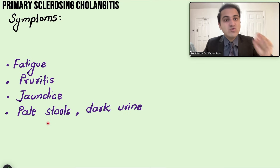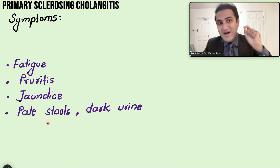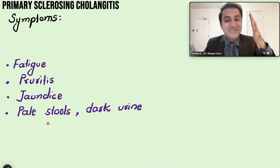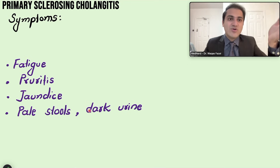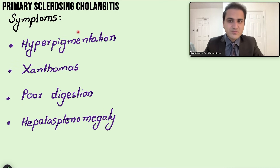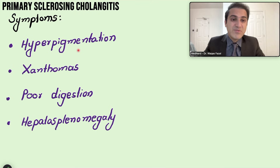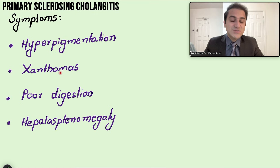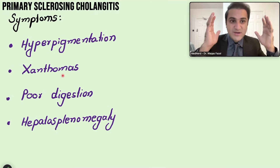Since bile is absent from stools, it is instead excreted by the kidneys, causing dark urine. Patients also experience hyperpigmentation due to increased melanin production through an idiopathic mechanism. Liver damage disturbs lipid metabolism, causing lipids to deposit in various tissues.